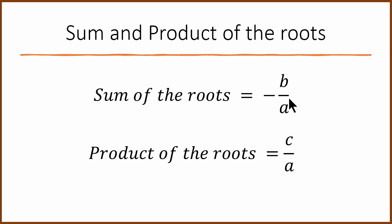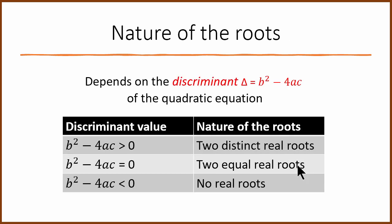This sum and product relationship is very, very important for solving multiple choice questions. Finally, the nature of the roots depends on the discriminant concept. The discriminant is b squared minus 4ac. Depending on its value, you have either real roots, no real roots, or distinct and equal roots.